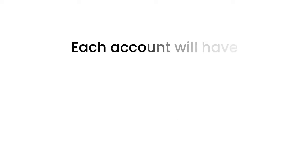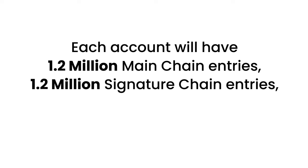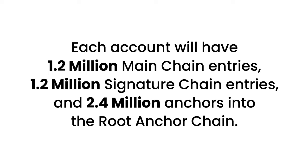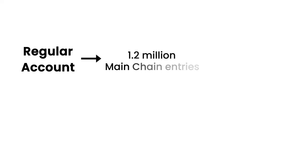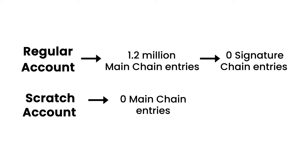During this two-week period, each account will have 1.2 million main chain entries, 1.2 million signature chain entries, and 2.4 million anchors into the root anchor chain. After two weeks, the regular account will have 1.2 million main chain entries and 0 signature chain entries, but a scratch account will have 0 main chain entries and also 0 signature chain entries. Both accounts have still been anchored 2.4 million times, but the main difference is that the main chain entries — which are more expensive — have been pruned on a scratch account. On Accumulate, fees are primarily charged for transactions.